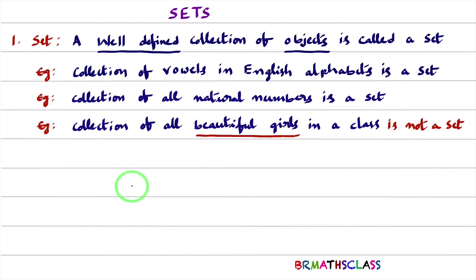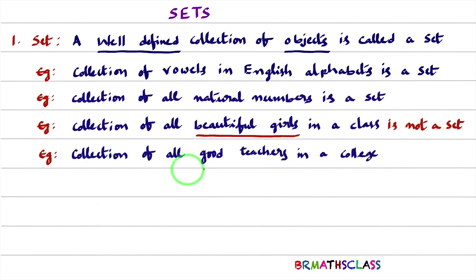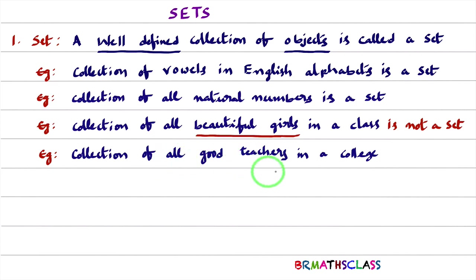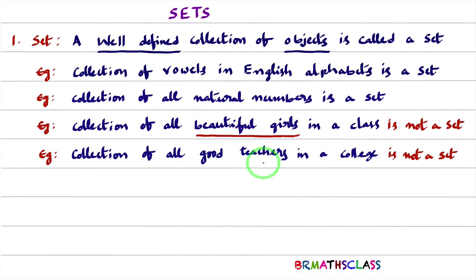One more example: collection of good teachers in a college. Suppose a particular teacher — you may feel that teacher is good, but another person may not feel the same. So 'good teacher' is a vague term; it is not well-defined. Therefore, collection of all good teachers in a college is not a set.